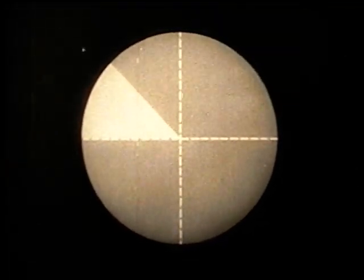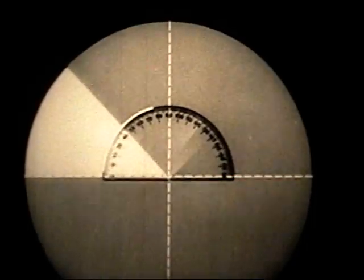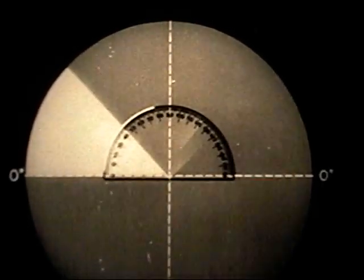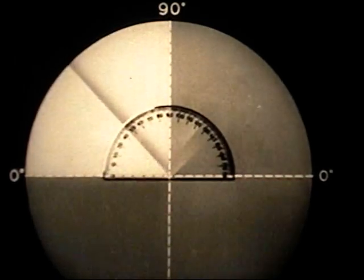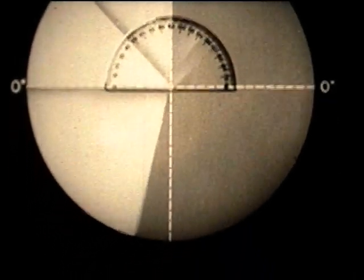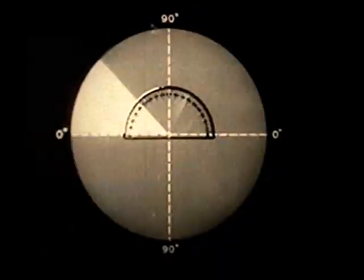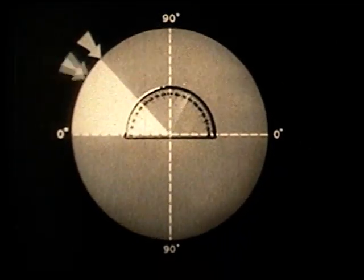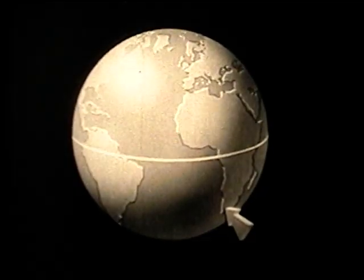This angle remains the same no matter how large or how small a model globe may be. Latitude is measured in degrees or parts of a degree. The equator is zero degrees. The highest possible latitudes are 90 degrees north and 90 degrees south. The latitude of this place is 45 degrees north, while this one is 30 degrees south.